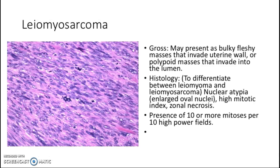The definition of increased mitotic index is the presence of 10 or more mitoses per 10 high-power fields. This is because there is an entity called leiomyoma with increased mitotic activity, which is still considered a leiomyoma and not leiomyosarcoma. So you need more than 10 mitoses per 10 high-power fields to diagnose leiomyosarcoma.